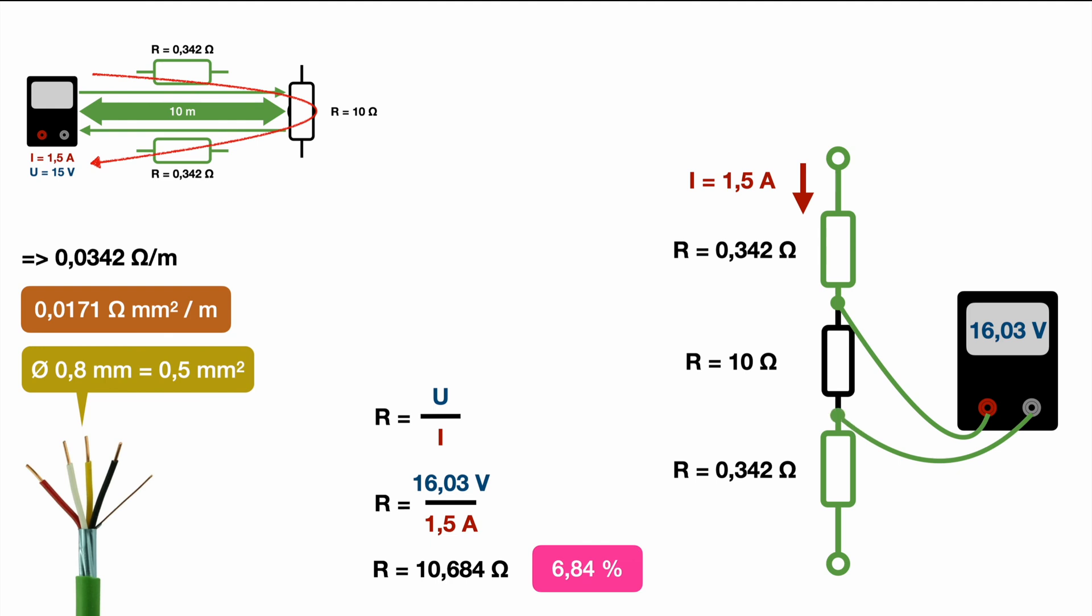In this scenario those 1.5 amps need to be injected by a separate device, so a separate power supply which will supply 1.5 amps at a constant level. Our measurement device is now functioning as a voltmeter only. In case we measure again we would measure the voltage drop only for this resistor and not for the whole circuit.